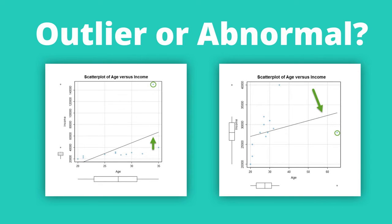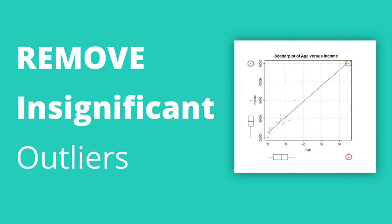On the other hand, if like in our first example, the outlier didn't really change the results — where in our example the regression line retained its original slope — then it can be legitimate to remove that observation.